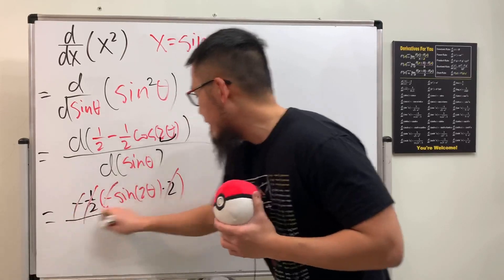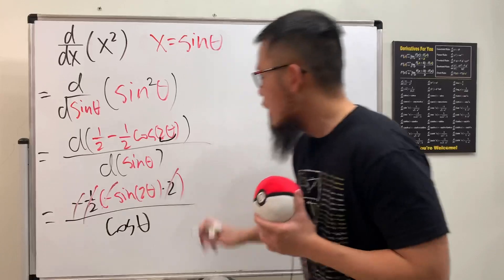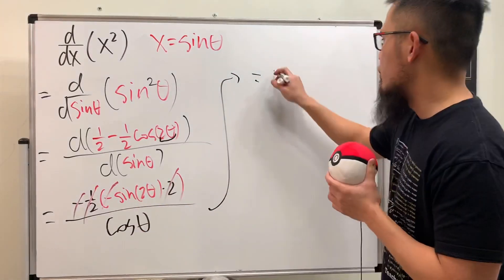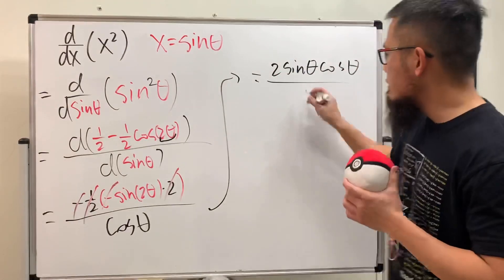And then divided by the derivative of sine theta, which is just cosine theta. Well, this right here is equal to the double angle identity, which is equal to 2 sine theta cosine theta, and then over cosine theta.